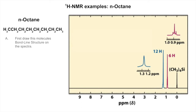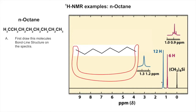Here's our n-octane NMR spectrum. First, draw the bond line structure of the molecule. Here it is - do I have eight carbons? One, two, three, four, five, six, seven, eight. I do. And that's so much quicker and easier to draw; it looks so much cleaner than writing out CH₃ CH₂ CH₂. I really like bond line structures.